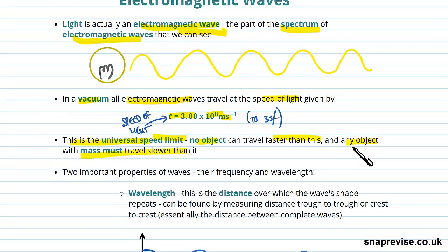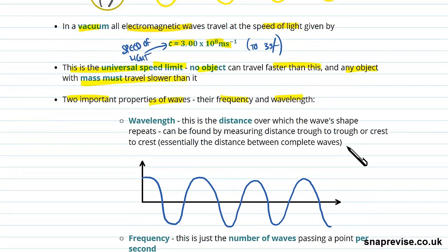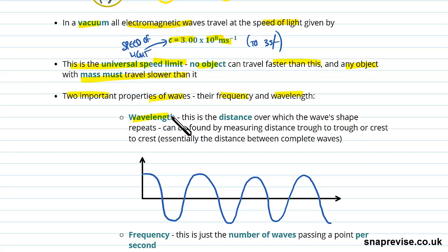So now let's just talk a bit about waves in general. There's two important properties of waves that we're going to need to use in this section, and that's their frequency and their wavelength. So wavelength, what is that? Well, this is the distance over which the wave shape repeats.